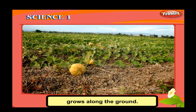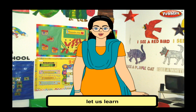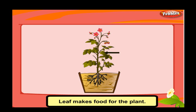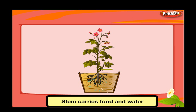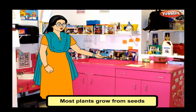A pumpkin plant grows along the ground. It is called a creeper. Now let us learn about the parts of a plant. Flower is the beautiful part that gives seeds or fruits. Leaf makes food for the plant. Stem carries food and water to all parts of the plant. Root gives support and takes water and nutrients from the soil.